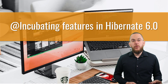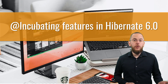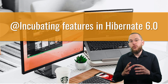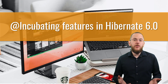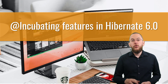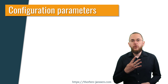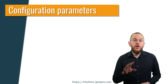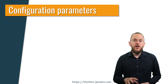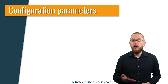Hibernate 6 includes several features marked as Incubating. Most of them are SPIs used to integrate Hibernate in different environments and aren't relevant for us as application developers. But there are some new features that you should know that are marked as Incubating. Hibernate 6 introduces 4 configuration parameters that you can use to configure the JDBC type that Hibernate shall use to map attributes of type Boolean, UUID, Duration, and Instant.